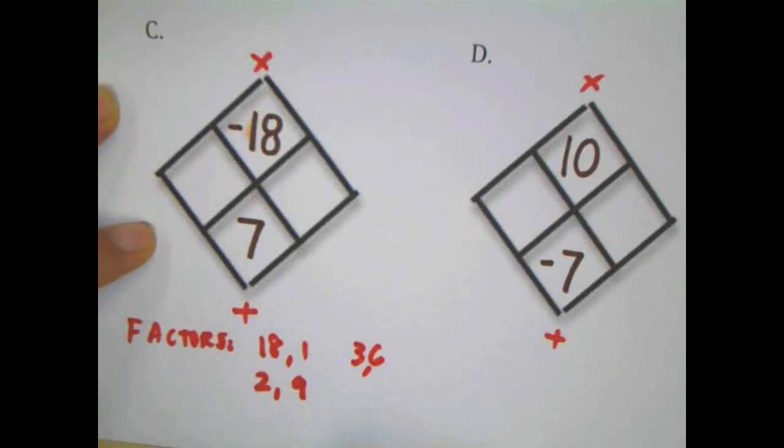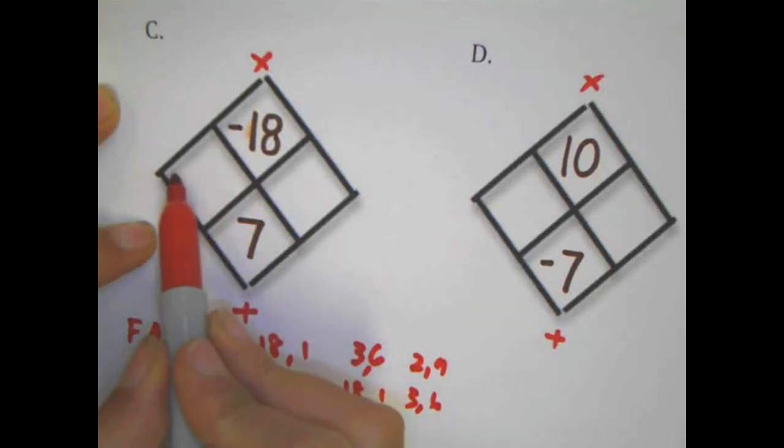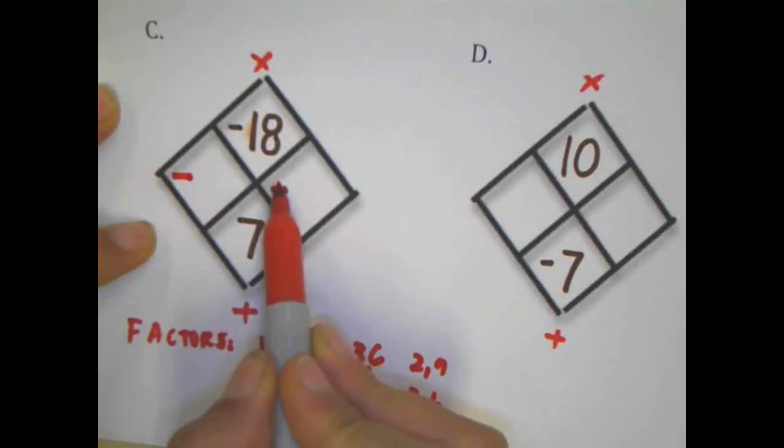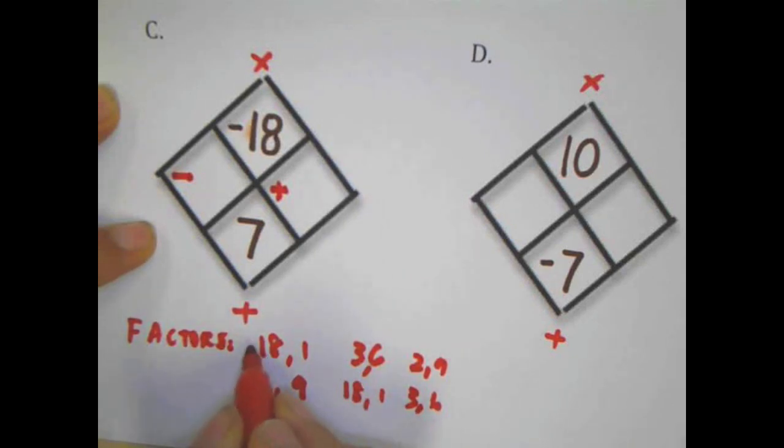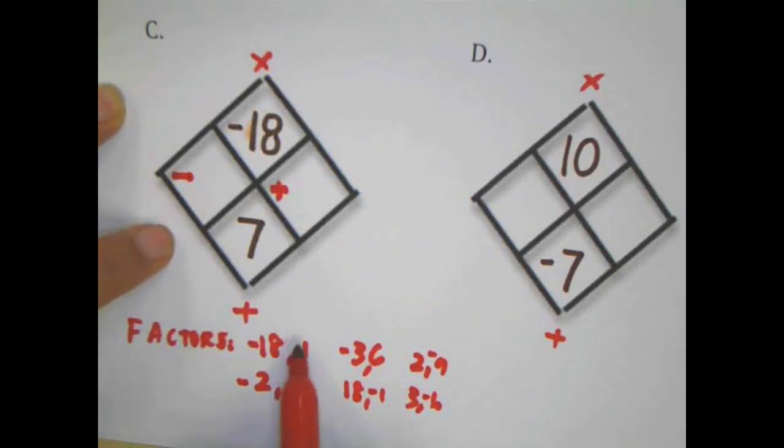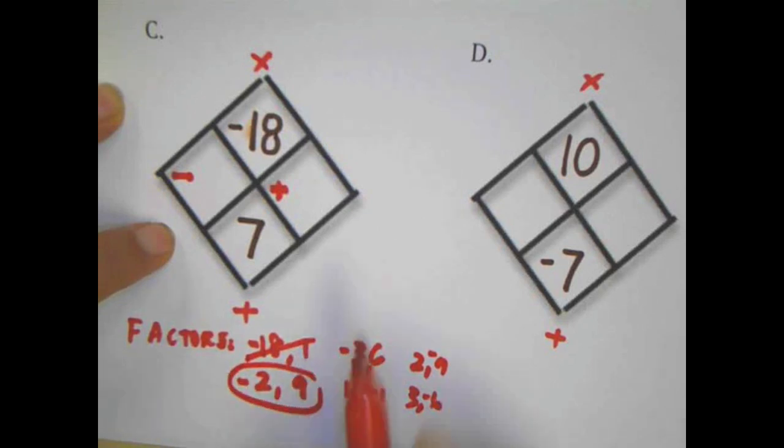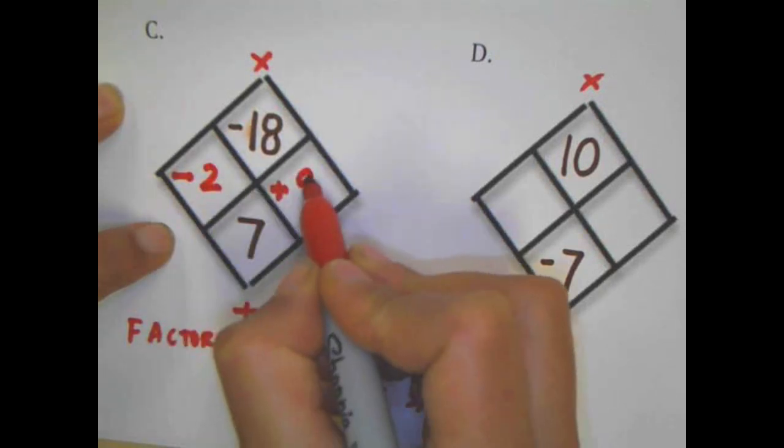Because I have a negative, I'm going to write the factors again. Because it's negative, I know one of them has to be negative and one has to be positive. I'm going to go through these pairs and make the first ones negative, and then the second time, I'll make the second ones negative. Those are all the factor pairs for negative 18. I want to see which combination adds to positive 7. There it is: negative 2 and positive 9.